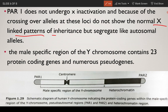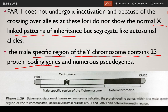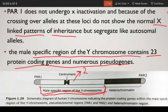The male-specific region of the Y chromosome (MSY) contains 23 protein-coding genes and numerous pseudogenes.